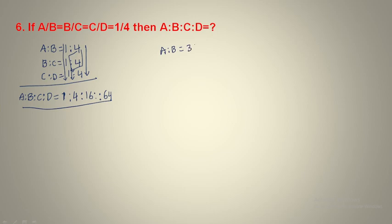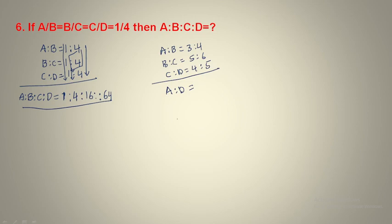Next part: a is to c is equals to 5 is to 6, and c is to d is equals to 4 is to 5. Then what is a is to d? You can find a:d by first building a:b:c:d. Create a:b:c:d by combining these ratios and then calculate the values.